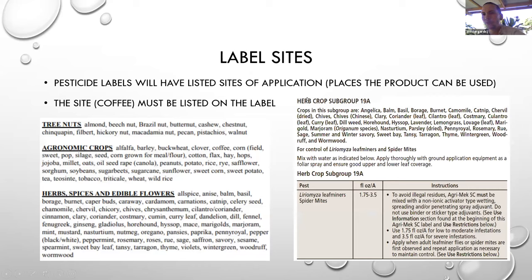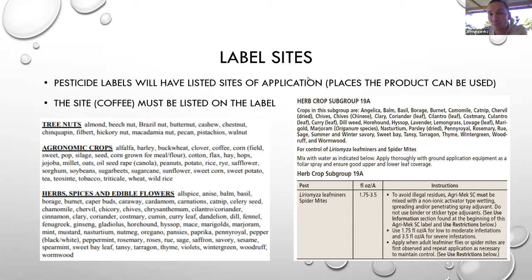Label sites — this one's really basic. If you want to use a pesticide anywhere, you need to have the site on the label. Since we're all growing coffee here, if you want to use a pesticide on coffee, it's got to have coffee on the label. There are some pesticides with subcrop groups, but coffee is not listed in any of the subcrop groups. So coffee must be on the label to use the pesticide on coffee.